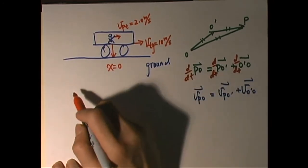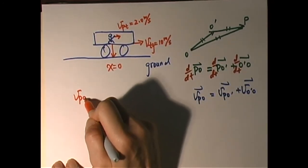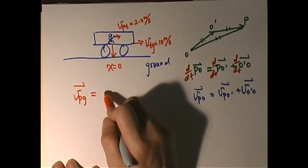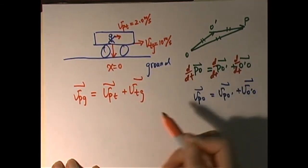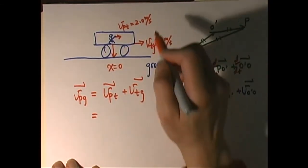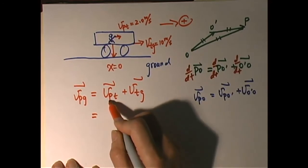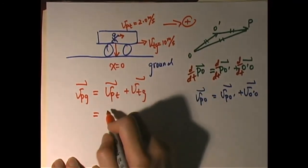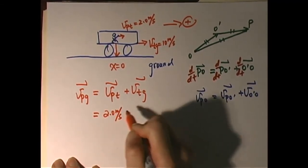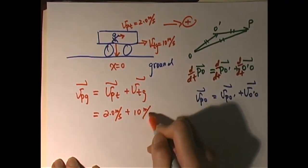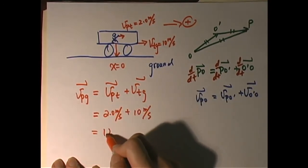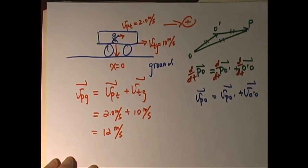So we are asking v person to the ground. Using the equation: v person to the ground equals v person to the train plus v train to the ground. Choosing to the right as positive, person to the train is positive 2.0 meters per second, and train to the ground is positive 10 meters per second. So person to the ground equals 12 meters per second positive, meaning to the right. Therefore, after one second, this person is 12 meters to the right of x equal to 0.